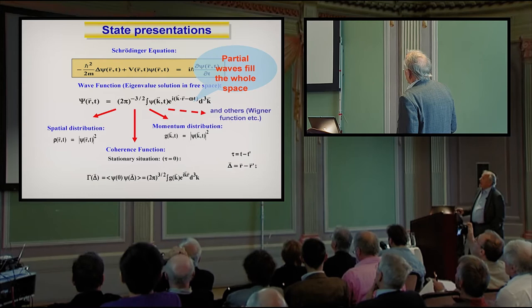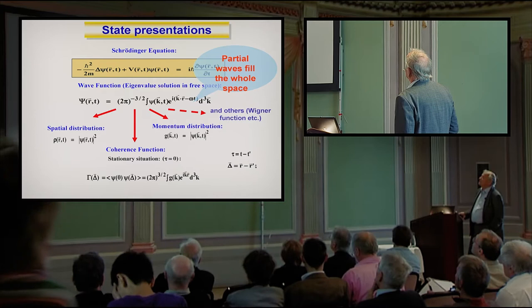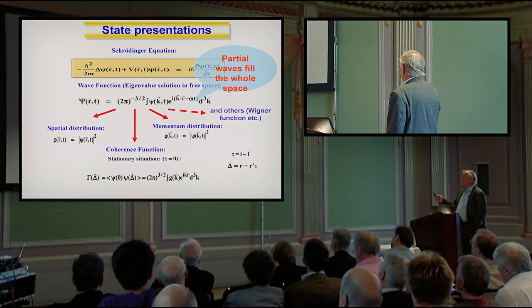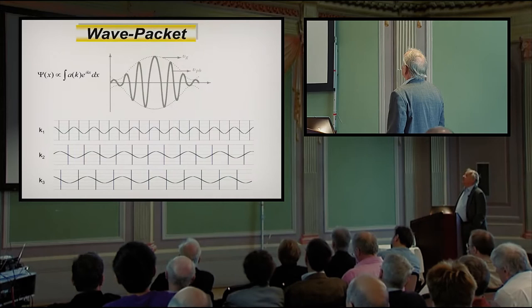And you see, therefore, it's described by the Schrödinger equation, and the eigenvalue solution is the superposition of plane waves. And that I wanted to stress. And you see that the coherence function, or this envelope, is given by a Fourier transform of the momentum distribution. And also, I want to say always, is that these partial waves here fill the whole space, not only where the packet is.